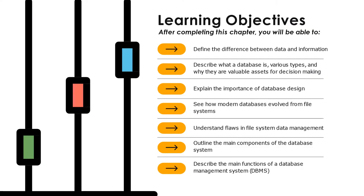After completing this chapter, you will be able to define the difference between data and information, describe what a database is, its various types, and why they are valuable assets for decision-making, explain the importance of database design, see how modern databases evolved from file systems, understand the flaws in file system data management, outline the main components of the database system, and describe the main functions of a database management system.